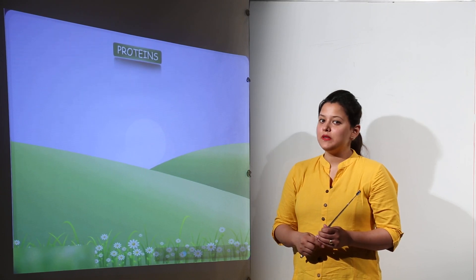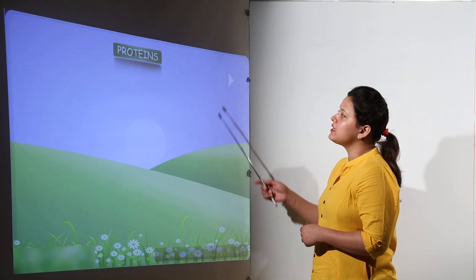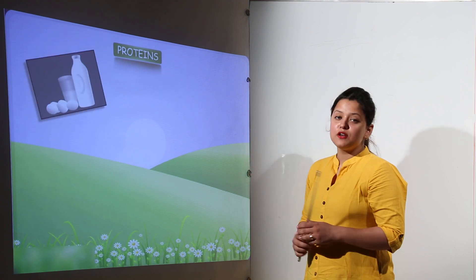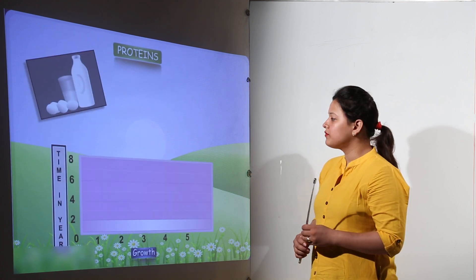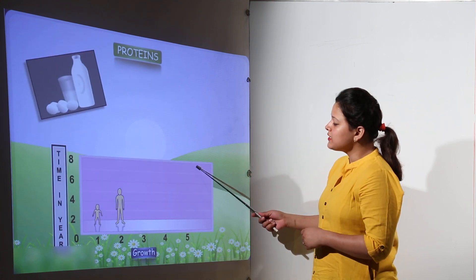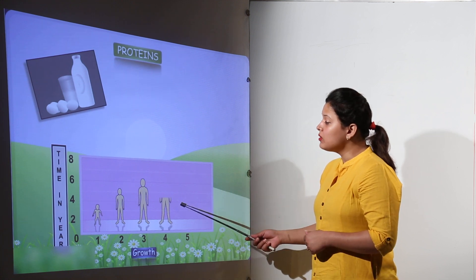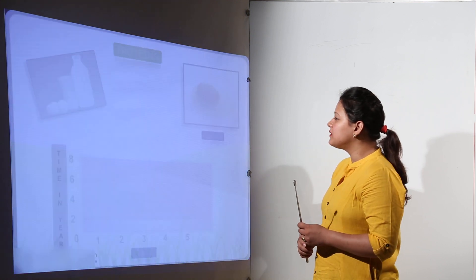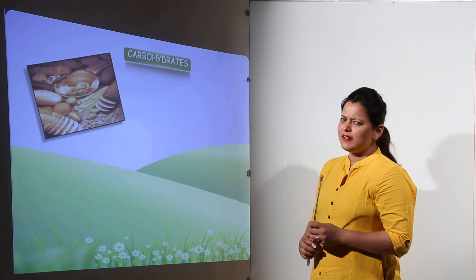Food. The food that we eat contains many things like proteins. Proteins are known as the building blocks of food. As you can see, the proteins also help us to grow. So these are known as the building blocks, like the egg yolk.